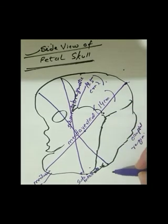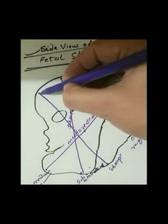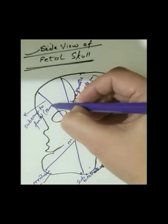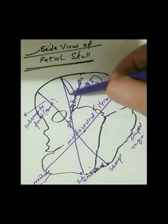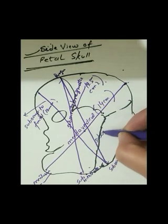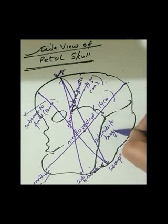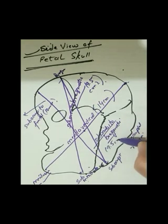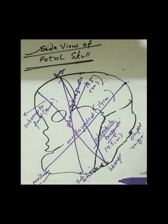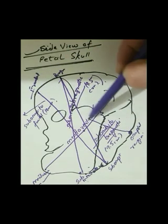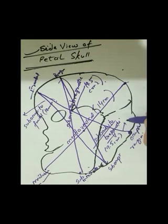This part is the occipital region, and that is the sub-occipital part. From sub-occipital to frontal bone — the sub-occipital frontal diameter — is 10 centimeters. From sub-occipital point to bregma, the sub-occipital bregmatic diameter, is 9.5 centimeters. From the occipital point to the frontal bone is the occipital-frontal diameter, in which we will have vertex presentation.